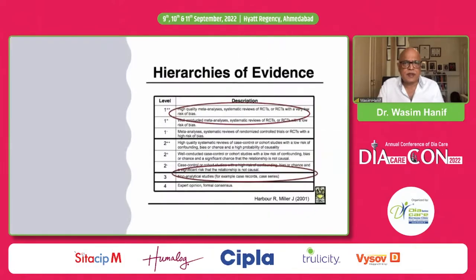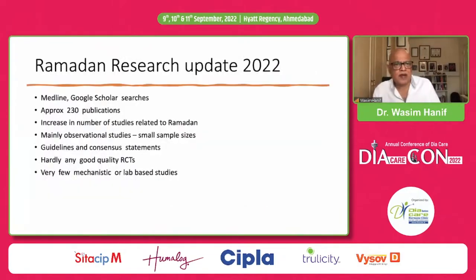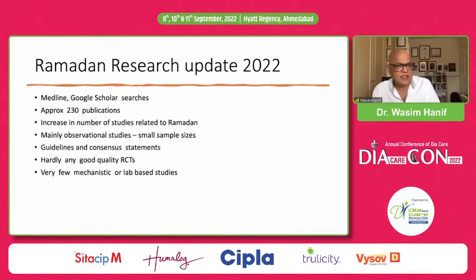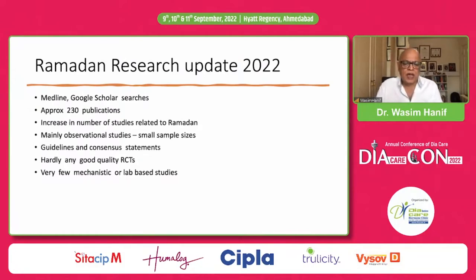Since then, a lot of studies have been done at a global level. This is just to show the hierarchy of evidence, as we all know. Sadly, the studies that are done in ethnic minority populations — and I'm going to use the example of Ramadan — are actually a bit low-quality studies. We did a Medline search on Google Scholar and found nearly 230 publications on Ramadan in 2021 and 2022. But the problem was these were mainly observational studies of low quality, with very small sample sizes, and most of them were guidelines and consensus statements made on these small sample sizes. There were no RCTs or good quality RCTs, and very few mechanistic or lab-based studies.